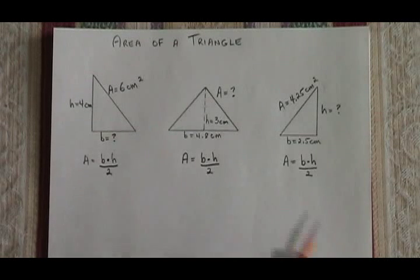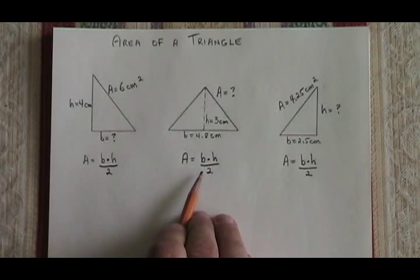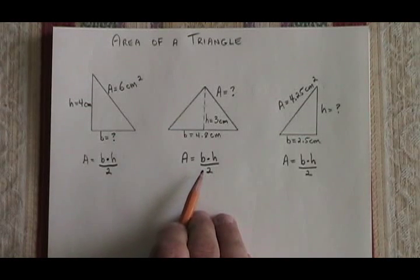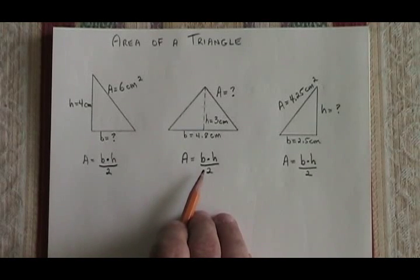The formula for the area of a triangle is A equals B times H over 2. B stands for the base and H is the height.